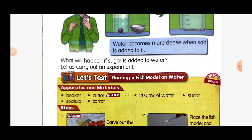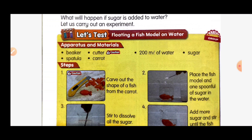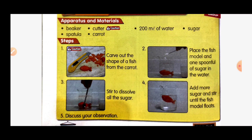What will happen if sugar is added to the water? Let's carry out an experiment: floating a fish model on water. You need beakers, spatulas, a cutter — be cautious when using the cutter — carrots, 200 ml of water, and sugar. Step one: cut the shape of a fish from the carrot. Step two: place the fish model and one spoonful of sugar in water. Step three: stir to dissolve all the sugar. Lastly, add more sugar and stir until the fish model floats.